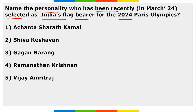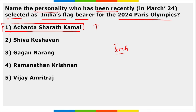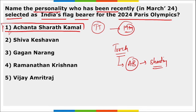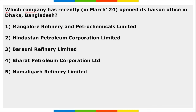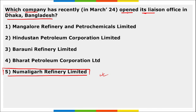Achanta Sharath Kamal, a table tennis player, has been selected as India's flag bearer for the 2024 Olympic Games in Paris, France. He will be India's 19th flag bearer at the Olympics. Abhinav Bindra will be the torch bearer. Next, Numaligarh Refinery Limited recently opened their liaison office in Dhaka, Bangladesh — this will be the first cross-border pipeline for supply of petroleum products to Bangladesh.